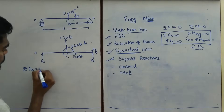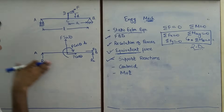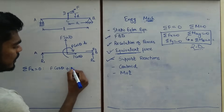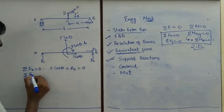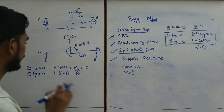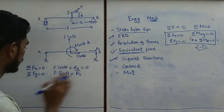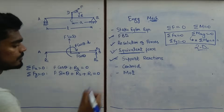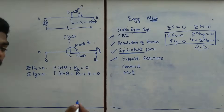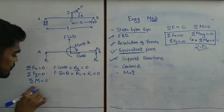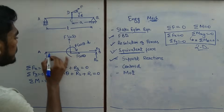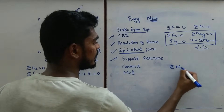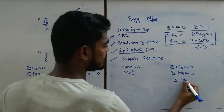Let's write those equations. First: ΣFx = 0 — summing all forces in the x-direction gives F cos theta + R3 = 0. Second: ΣFy = 0 — F sin theta + R2 + R1 = 0. For the third equation, we write ΣM = 0. We can calculate the moment about any point — A, C, or B.